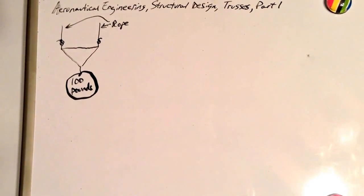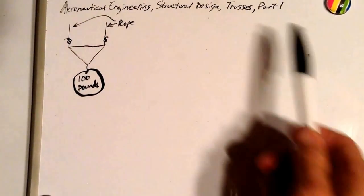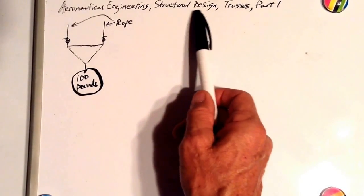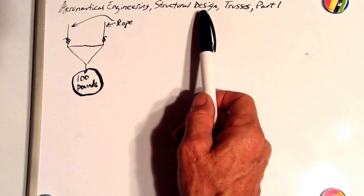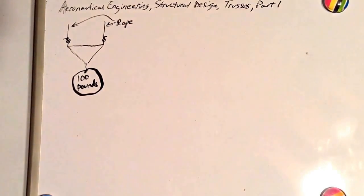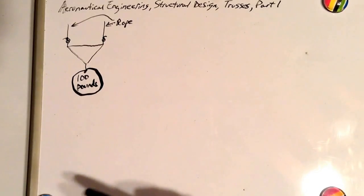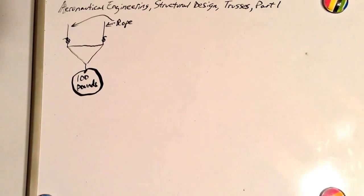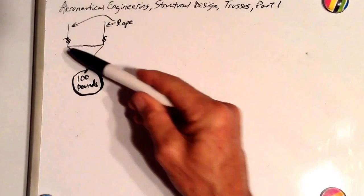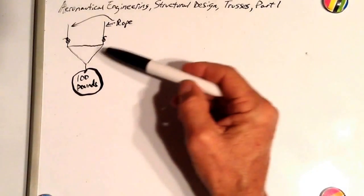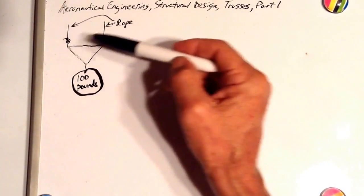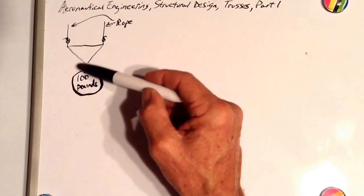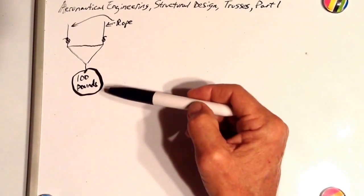This is part one of the trusses subsection of the structural design section of our aeronautical engineering course. Here's a simple structure — about as simple as you can make a structure. It's just a triangle held up by two ropes with a 100 pound weight hanging at the bottom of the triangle.